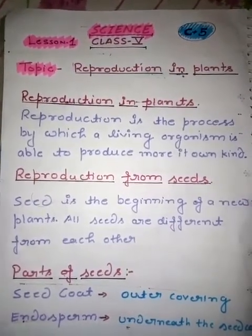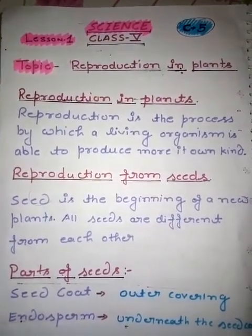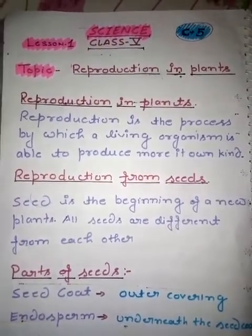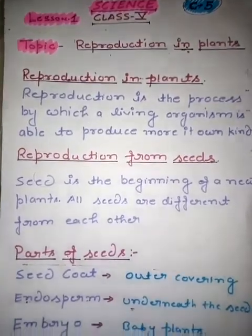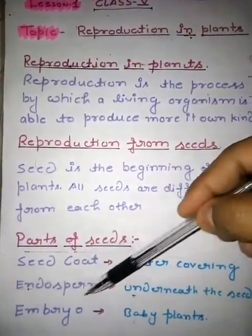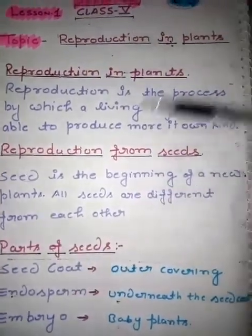Despite their differences, most seeds have three parts: seed coat, endosperm, and embryo.